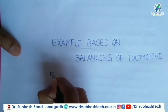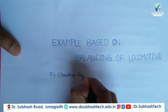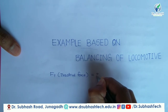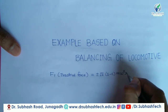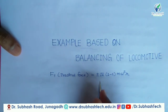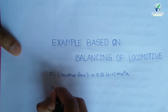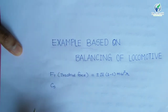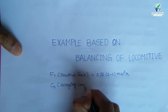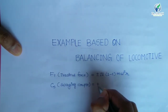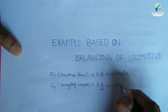The first equation is tractive force, Ft. The equation of tractive force is equal to plus or minus root 2, in bracket (1 minus C) times m times omega squared times r. This is the equation of tractive force in a locomotive engine. Similarly, another equation is the swaying couple, Cs. The swaying couple equation is equal to plus or minus L upon root 2, times (1 minus C) times m times omega squared times r.